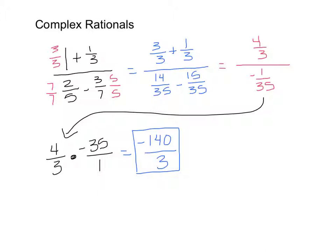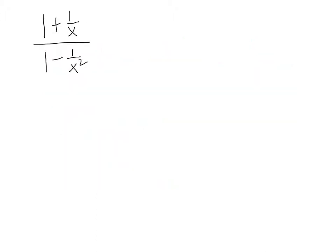Now we're going to look at some fractions with variables in them where things get a little trickier. We're still going to do the same steps — finding the common denominators and simplifying. Here's a fraction with x's in them. The numerator has 1 plus 1 over x, and the denominator has 1 minus 1 over x squared. To simplify this, we'll simplify the top and then the bottom, treating each individually before putting anything together.